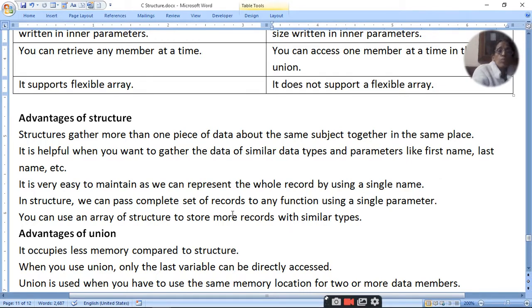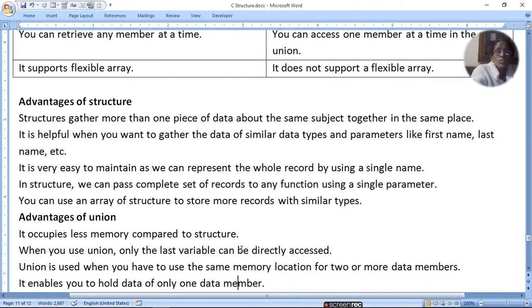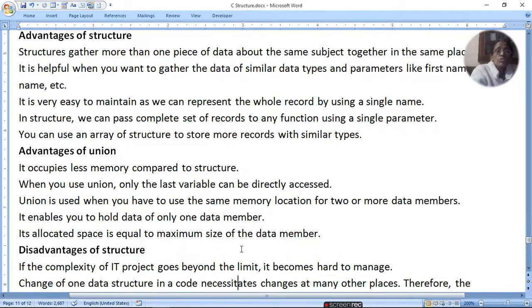The advantage of union is it occupies less memory compared to structure. Why less memory? Because all data members are stored in one place. The memory is reduced. When you use union, only the last variable can be directly accessed. Union is used when you have to use the same memory location for two or more data members. It enables you to hold data of only one data member. It allocates space equal to the maximum size of data members.